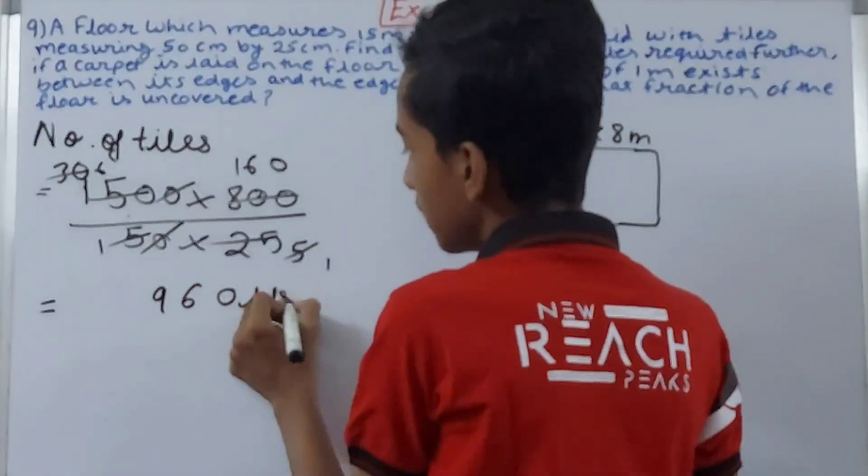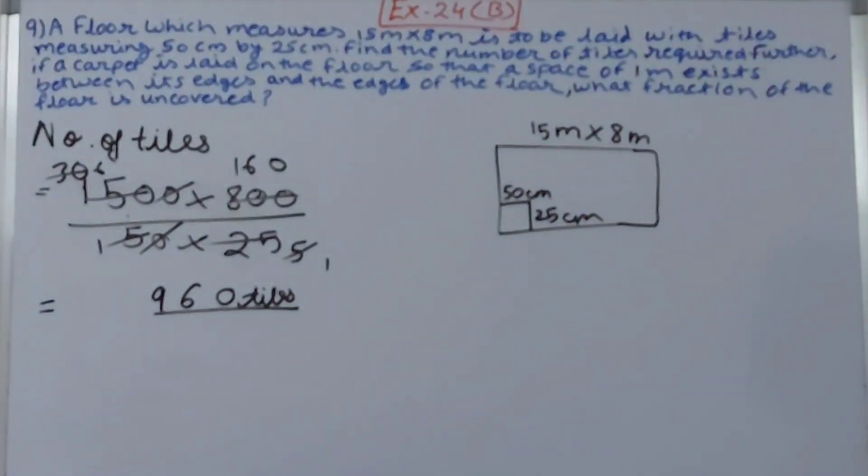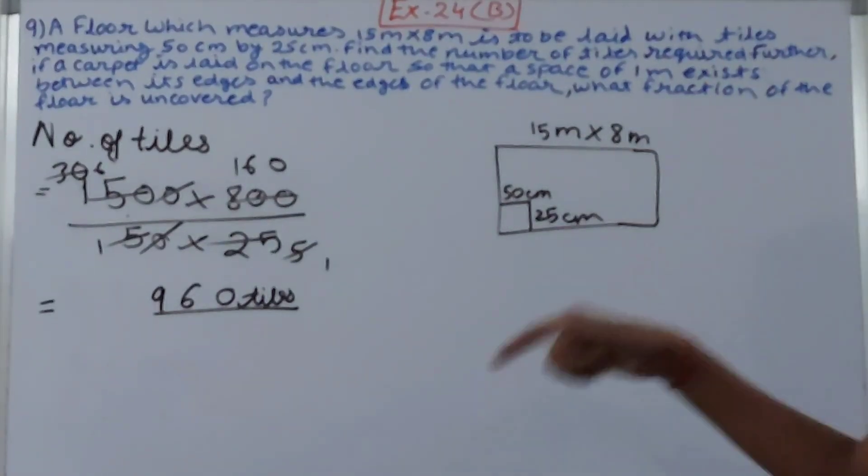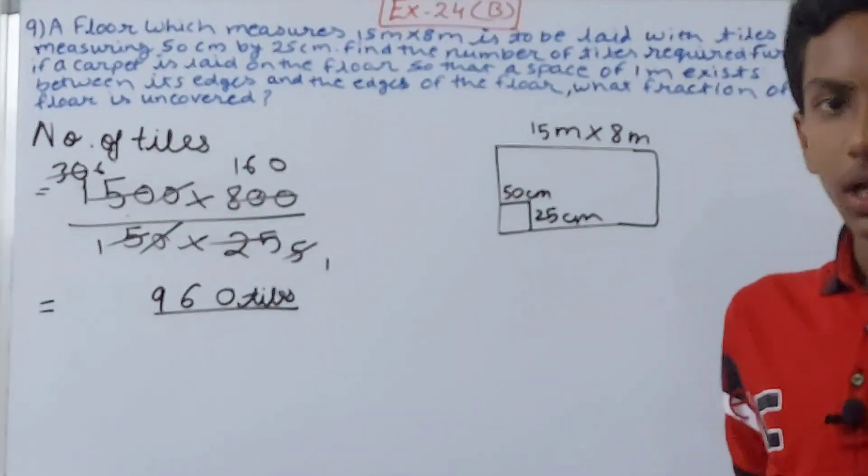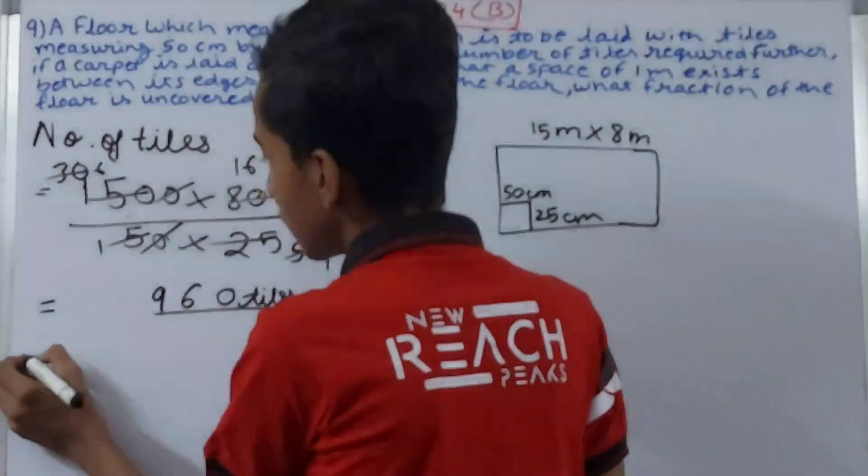Now it says that next, if a carpet is laid on the floor so that a space of 1 meter exists between its edges and the edges of the floor, what fraction of the floor is uncovered? For the fraction of the floor that is uncovered, total area will be what? Have a look here.